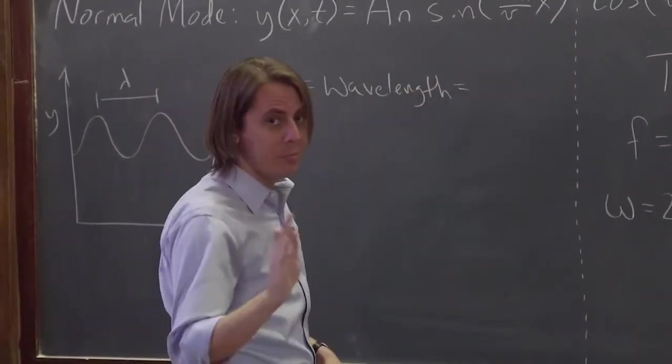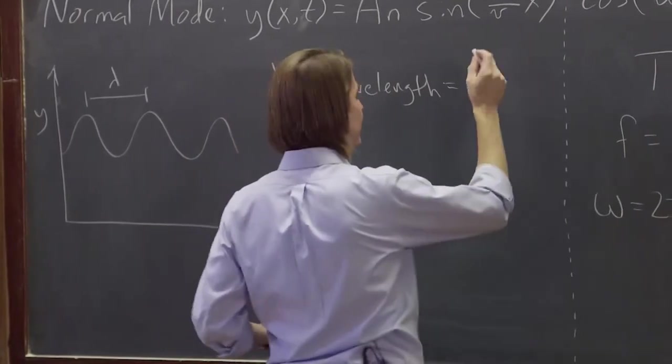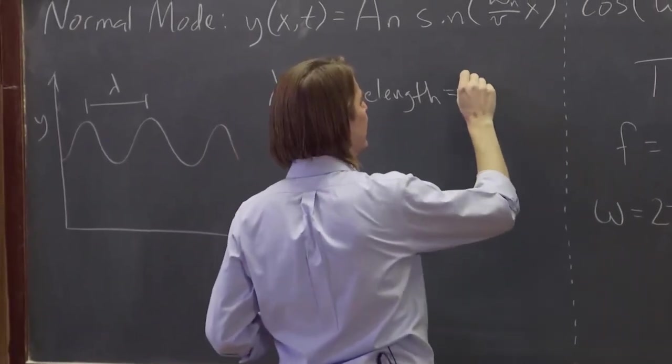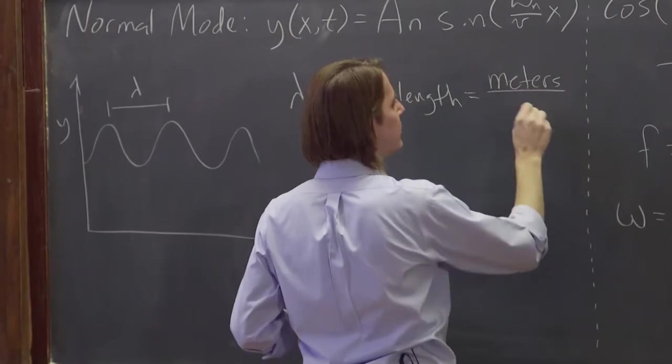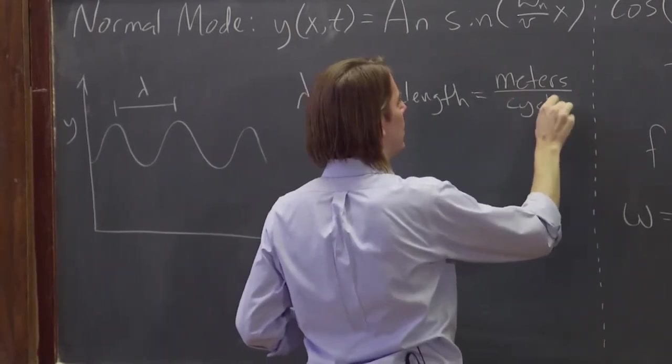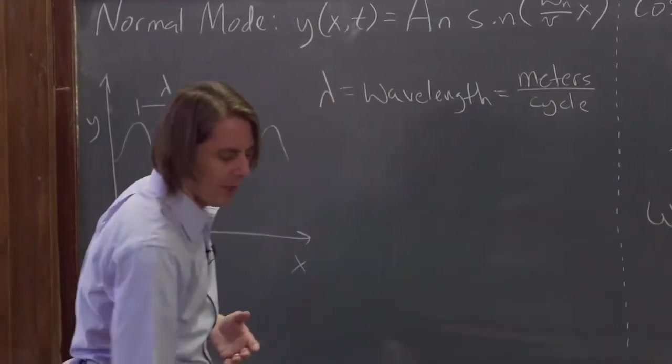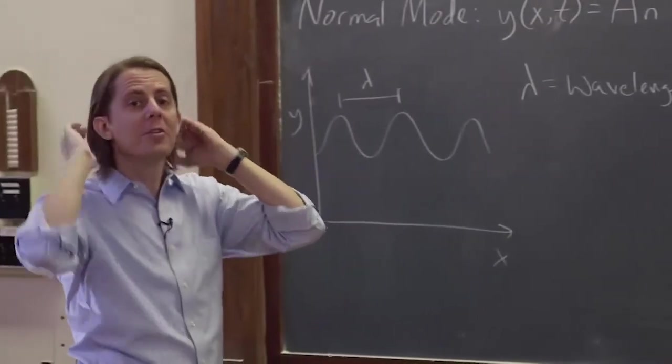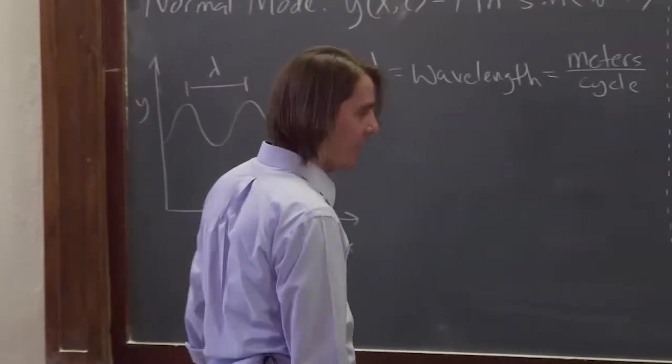But really, it's the meters per cycle. So lambda is in terms of meters, or nanometers, or whatever. But really, just like the period, it's the meters per cycle. And that's pretty much what you use a lot in early physics. You don't go much further than that.